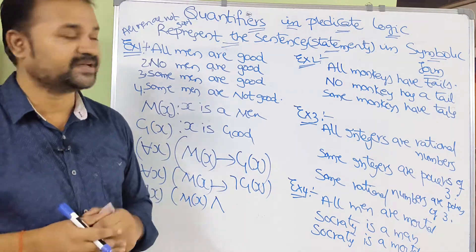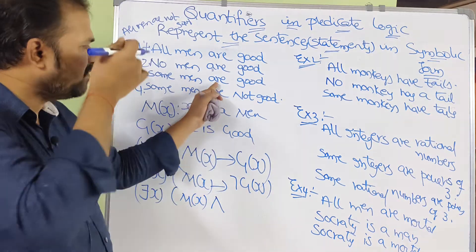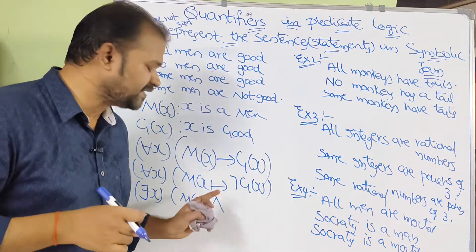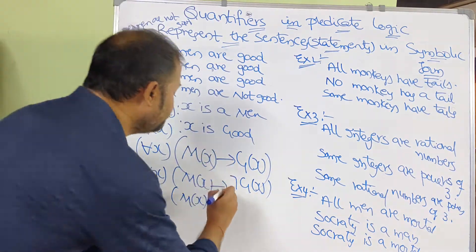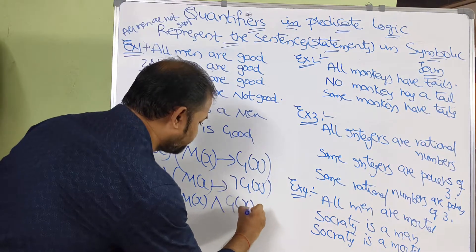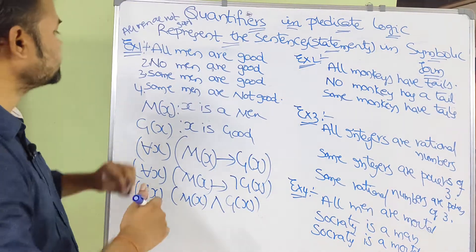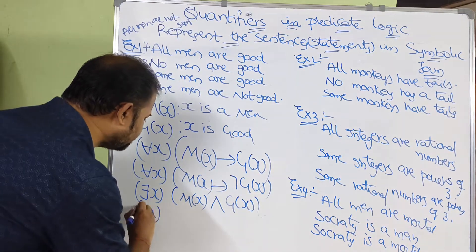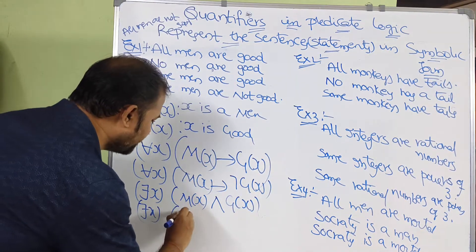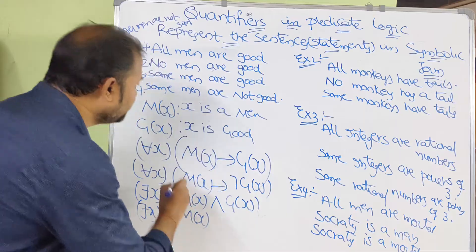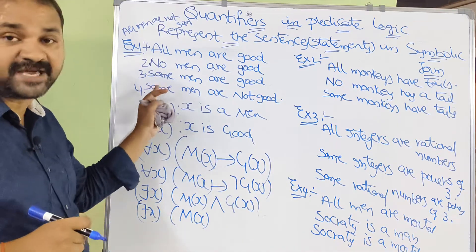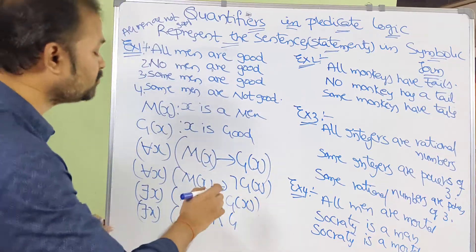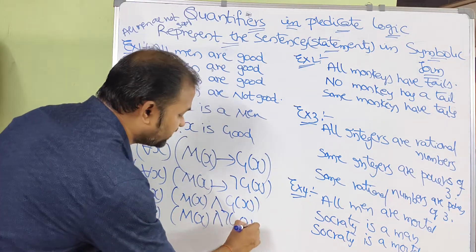When we use the existential quantifier and the sentence contains 'some', it is better to use AND instead of implies. Fourth sentence: 'Some men are not good.' Some means existential quantifier, men means M(x), and since it's 'some' we use AND, and not good means negation of G(x). So: ∃x(M(x) ∧ ¬G(x)).